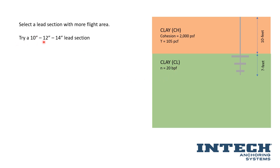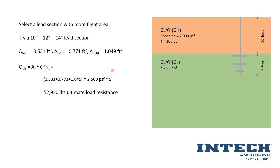We're going to try a 10-12-14 lead section. We pull the areas of each individual plate: 0.531 square feet for our 10-inch, 0.771 square feet for our 12-inch, and 1.049 square feet for our 14-inch. Since we're taking this lead section through the upper high plasticity clay layer, we can use the same bearing capacity for each flight and add those areas together. Plugging that into the same equation — adding those three areas, multiplying by cohesion, and multiplying by our bearing capacity factor — results in an ultimate capacity of 52,930 pounds.